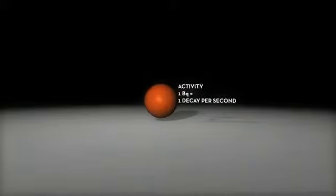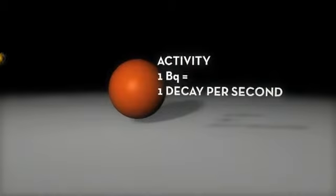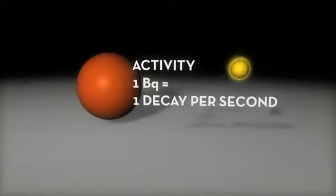The activity of radioactive substance indicates the number of nuclei decaying per time unit. Activity is measured by becquerel, where 1 becquerel equals 1 decay per second.